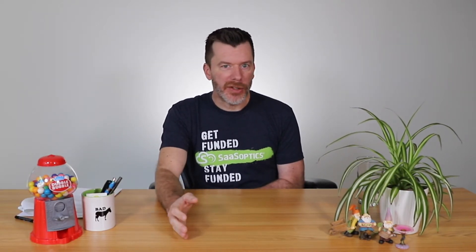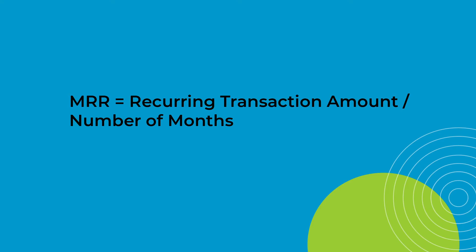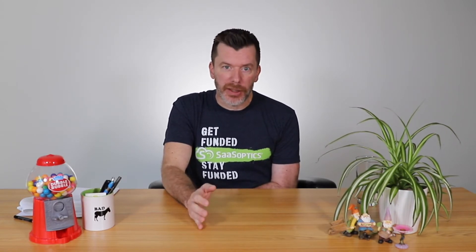I'm glad you asked. A PowerPoint presentation with simple formulas can lead you to believe that MRR calculations are very easy and simple, and in some cases they are. See? Easy. The exceptions are what can really cause issues. The higher the value of your contract elements and the more sales negotiation and contract volatility you have, the more difficult it can be to define the rules.